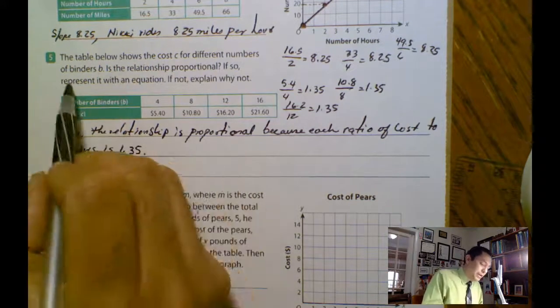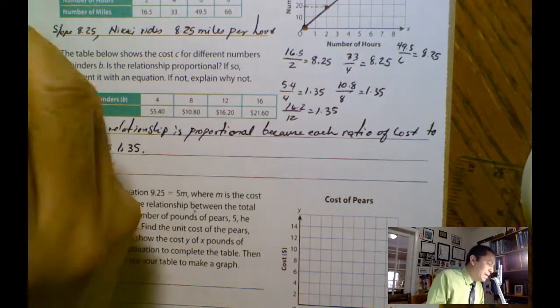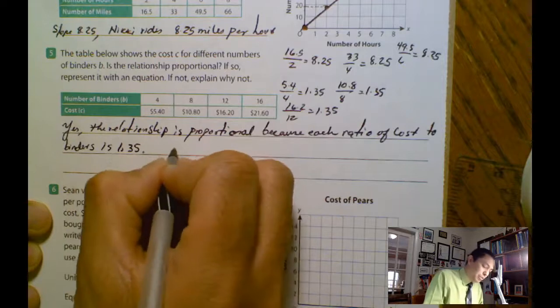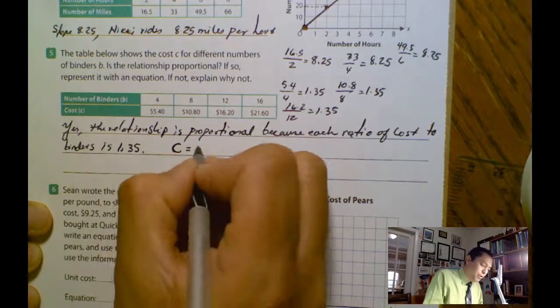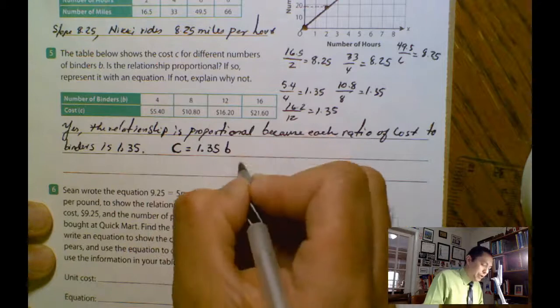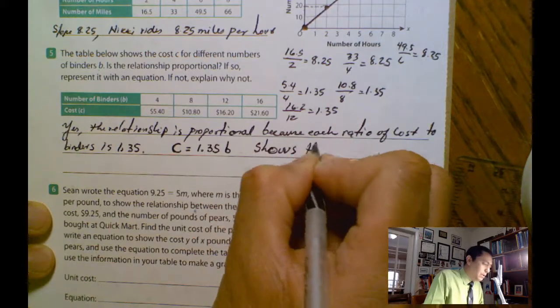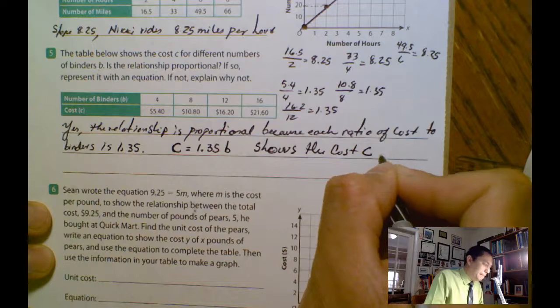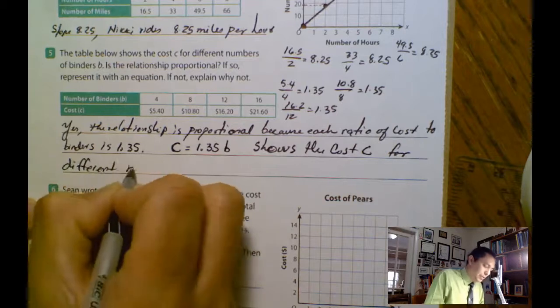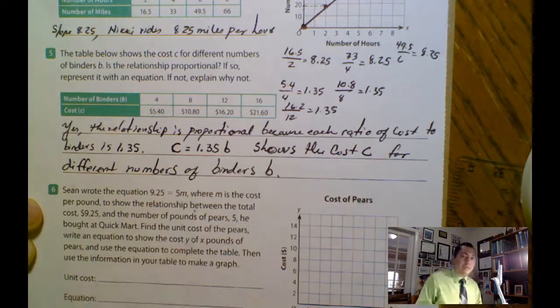What is the second question? Can you represent it with an equation? Yes. And this one usually goes straight to zero in the y intercept. So in this case, my equation will be, remember, it's a cost equation. So I'm going to say C equals 1.35 B, which are the binders. So what we have shows the cost C for different numbers of binders. That's the solution.